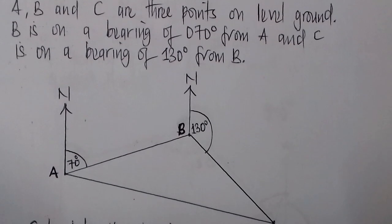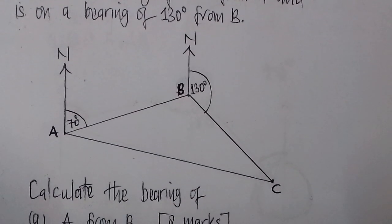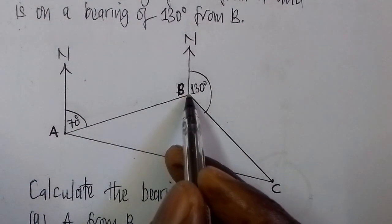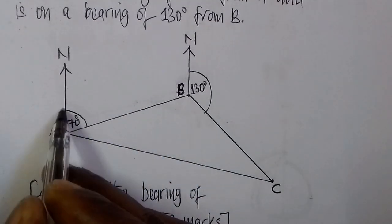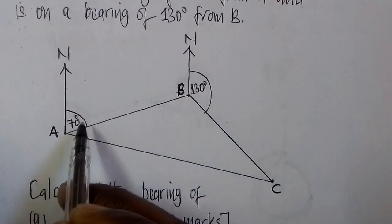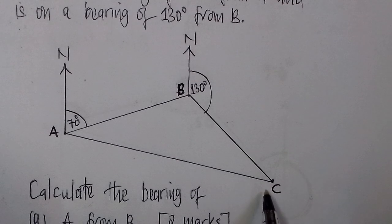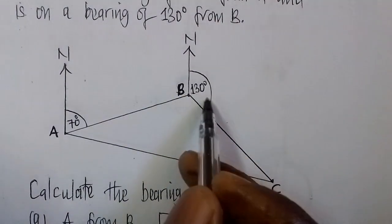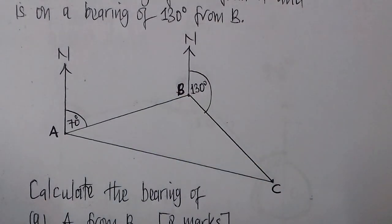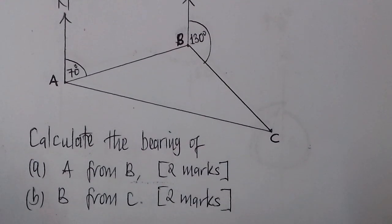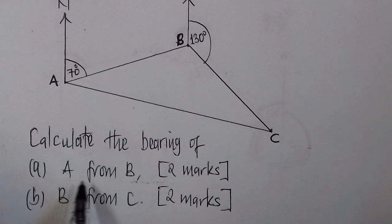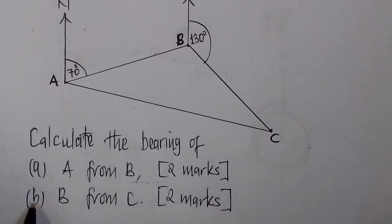This here is our diagram showing that information. The bearing of B from A is 070 degrees and the bearing of C from B is 130 degrees. The questions: Part A, calculate the bearing of A from B — this has two marks. Then Part B, calculate the bearing of B from C — this part also has two marks.